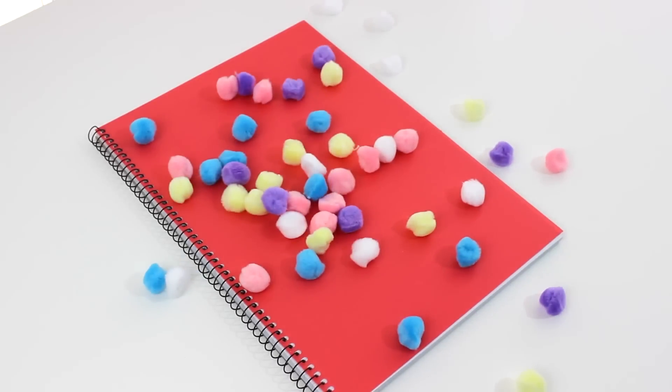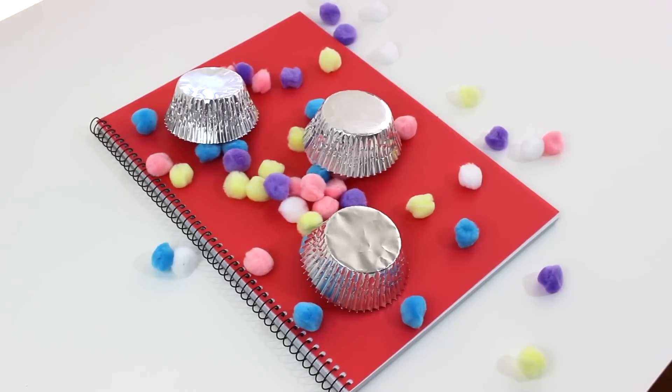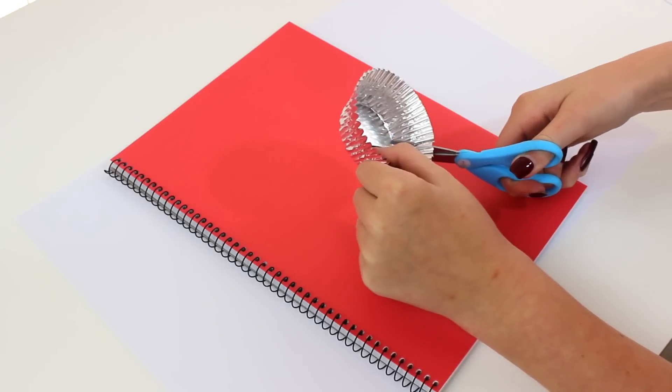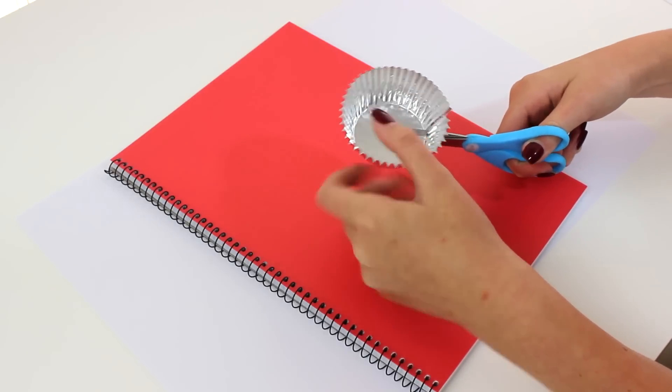So first for the cupcake notebook, you will need pom-poms, patty pans, and of course a book. Start off by cutting your patty pans in half. I use these silver tin ones and they're from Coles and they're really inexpensive and cheap.